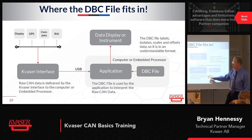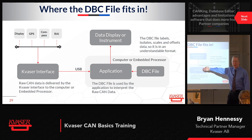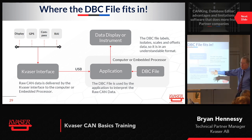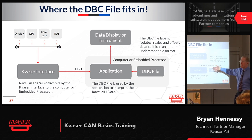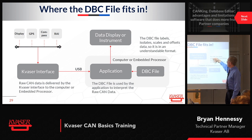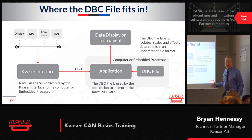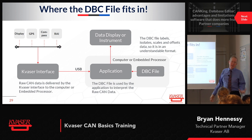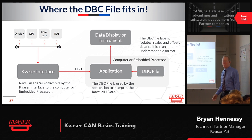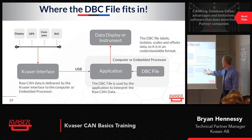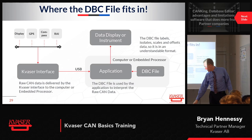Everything else done with the data is handled in the application or embedded processor out at the other end. It's a very reliable device that just delivers the raw data to the USB port. In the case of a data logger, it stores and saves the raw data. Generally when you have something on a CAN bus, it has a purpose — controlling something, displaying something, sensing something. In this graphical example I put a display or instrument there to indicate that yes, this data is going to be used for something. That's my DBC file explanation graphically.